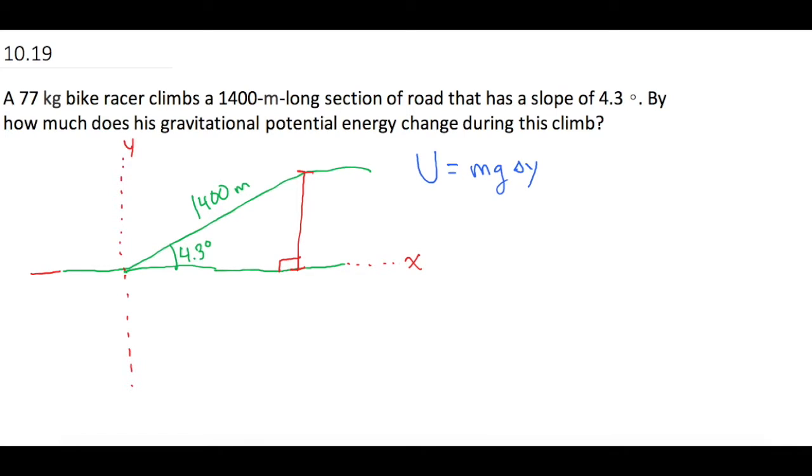We have hypotenuse is 1,400, and the angle is 4.3 degrees. So to figure out the opposite side in relation to the angle, we'll use sine.